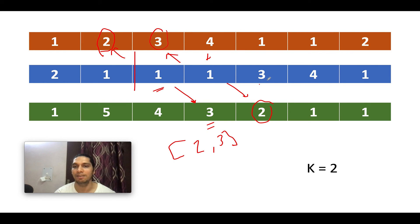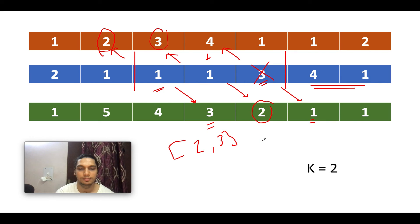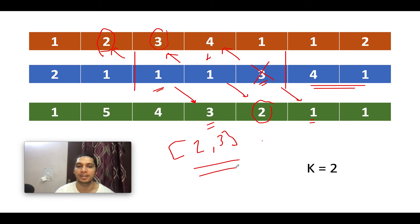Checking the next index, the non-increasing count value is 1, which is not greater than or equal to 2, so it is not a good index. We cannot go beyond the last valid index since there must be at least k elements to its right. The time complexity of this approach is O(n) and the space complexity is also O(n). The answer [2, 3] is in sync with our expectation.